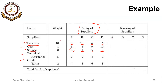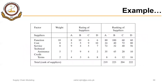Suppliers are ranked by multiplying weight by the rating of the supplier. For example, 10 times 8 gives 80 for supplier A on the first factor, 10 times 10 gives 100 for supplier B, supplier C gets 60, and supplier D gets 60. These weighted scores are added together to get a cumulative score, and the supplier with the highest score is selected. Like AHP, you could use this method not only to select suppliers but also to keep on evaluating them.